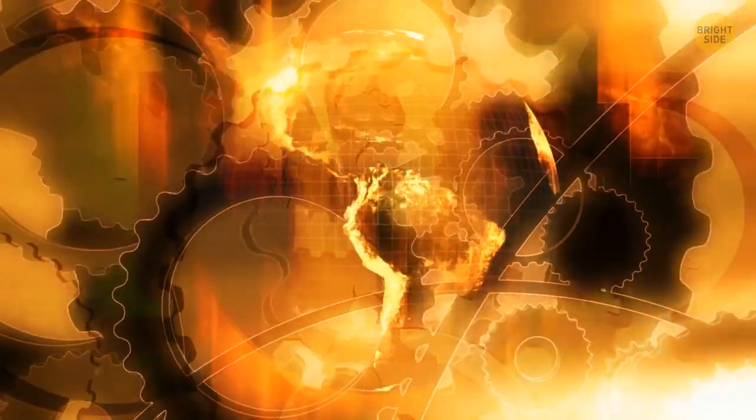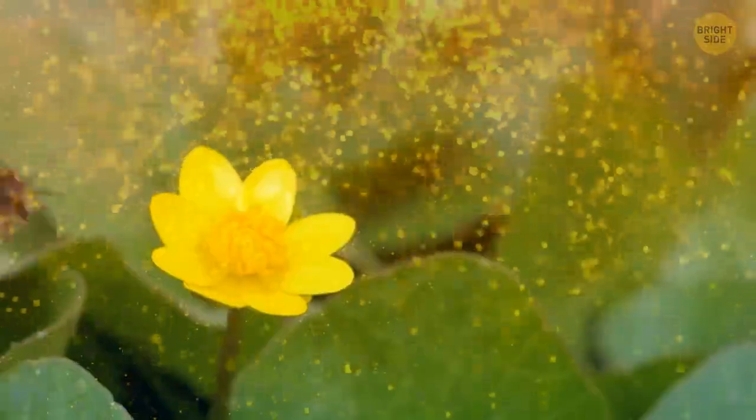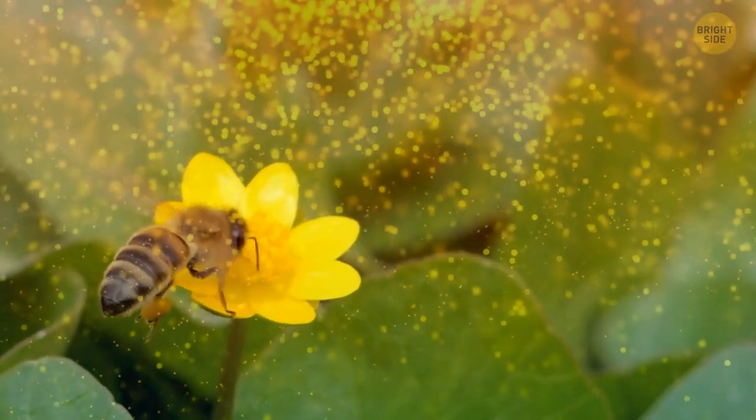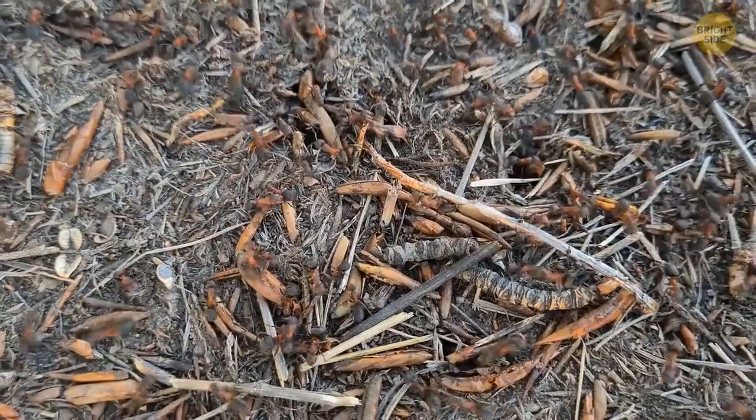But they all do their thing to make the planet a better place to live. For example, plants make oxygen that we breathe, and animals help pollinate flowers. Together, they form the biosphere, which is like the Earth's team of life.